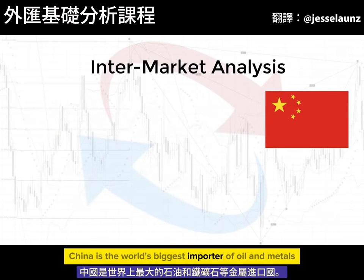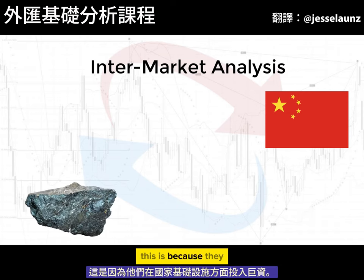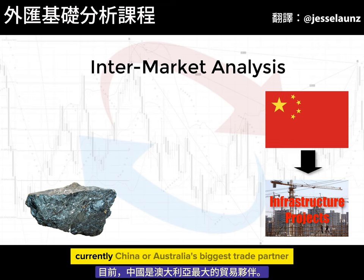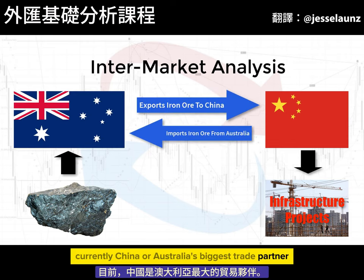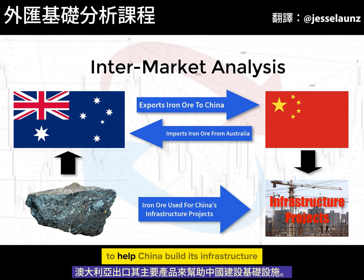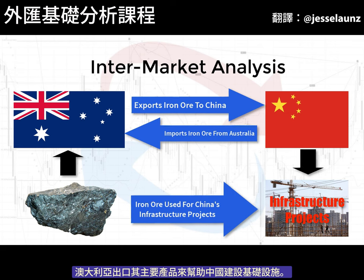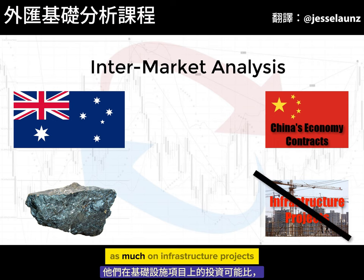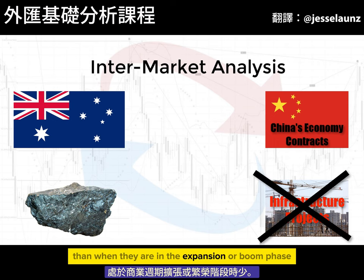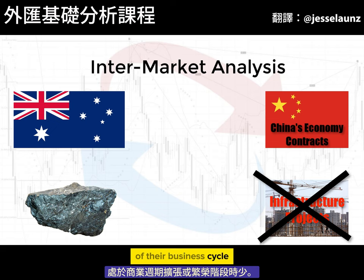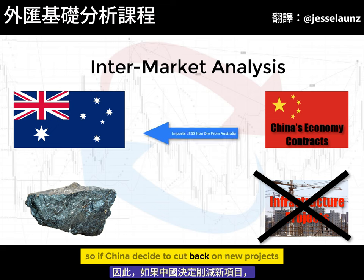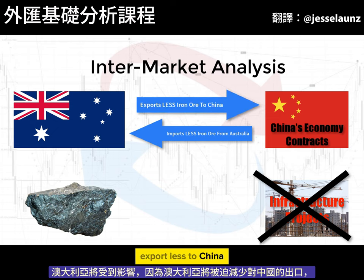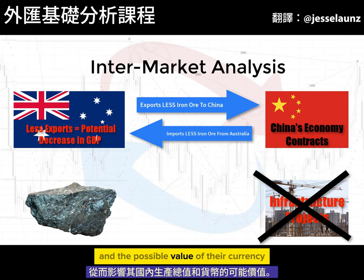China is the world's biggest importer of oil and metals like iron ore, because they are investing heavily in their country's infrastructure. Currently, China is Australia's biggest trade partner, and Australia exports their main product to help China build its infrastructure. If China's economy contracts or goes into recession, they may invest less in infrastructure projects. So if China cuts back on new projects, Australia will be forced to export less to China, thus affecting their GDP and the possible value of their currency.